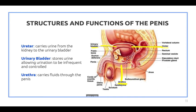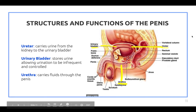Now we're looking at the structures and functions of the penis. The ureter carries urine from the kidney to the urinary bladder. The urinary bladder stores urine, allowing urination to be infrequent and controlled. The urethra carries fluids through the penis. These structures are highlighted for clarity as there are many structures in the male reproductive system.